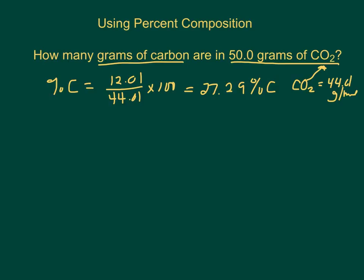Well, if CO2 is 27.29% carbon, then if I take 50 grams and take 27.29% of it, I will get 13.6 grams of carbon.